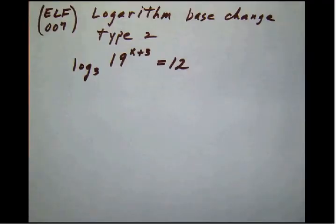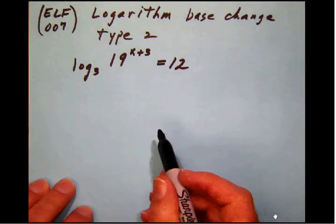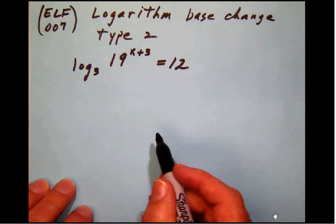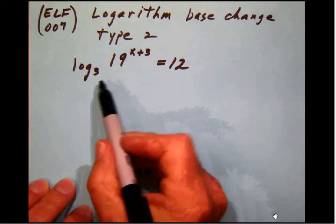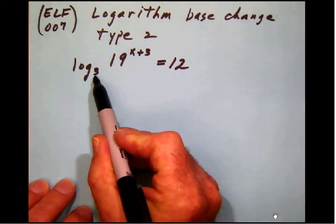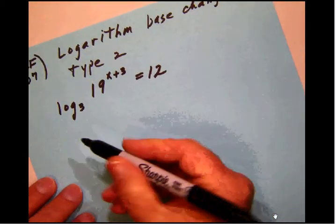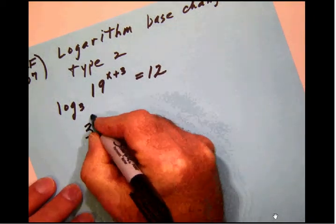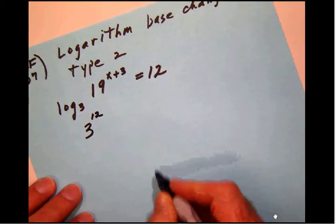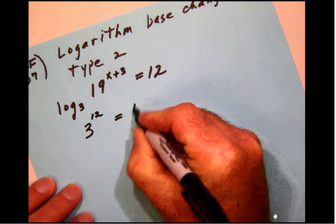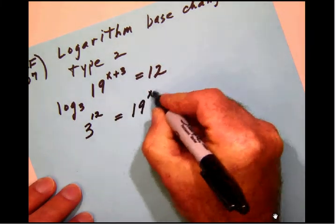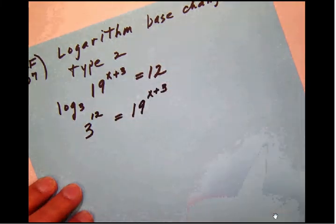Now the first thing that we would want to do, as we've done many times before, is to simply take this logarithmic form and change it into an exponential form. Because here we have a logarithm to the base of 3, and notice that that logarithm is 12. So what I'm going to do first is simply write 3 to the 12th. And of course that is equal to 19 raised to the x plus 3rd power.